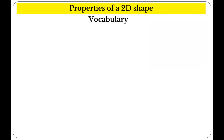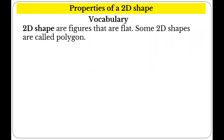Let's have some vocabulary. What are 2D shapes? 2D shapes are figures that are flat. Remember that? So 2D shapes are flat. Some 2D shapes are called polygons.